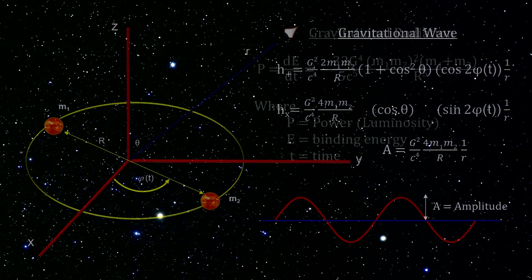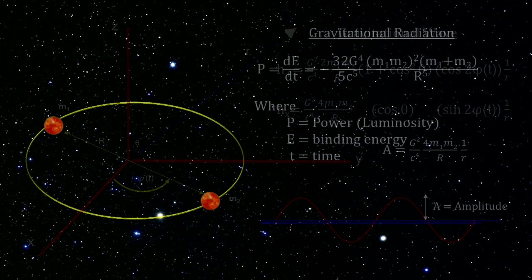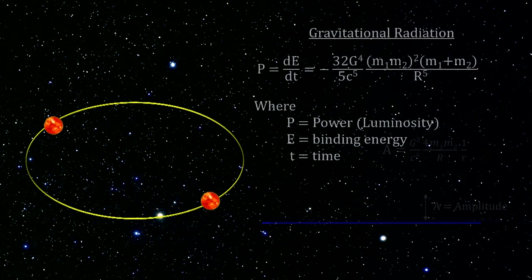There is one more key factor to consider when it comes to binary systems, namely, that the gravitational waves carry energy and momentum away from the system. We call this gravitational luminosity.